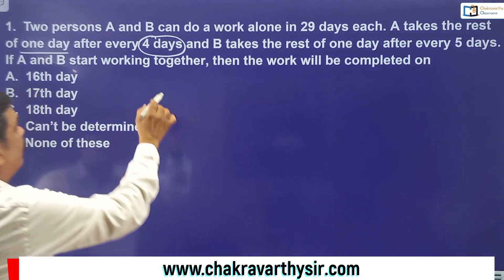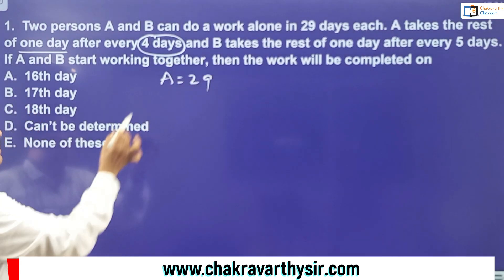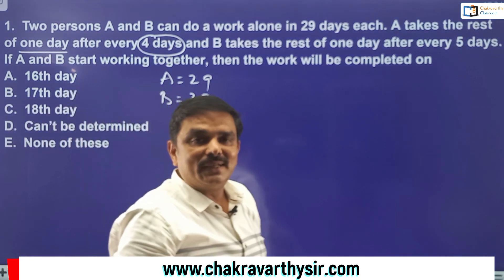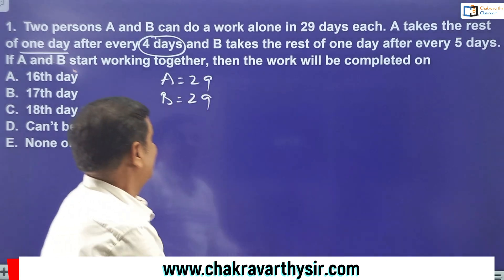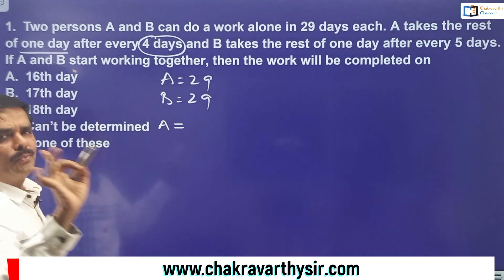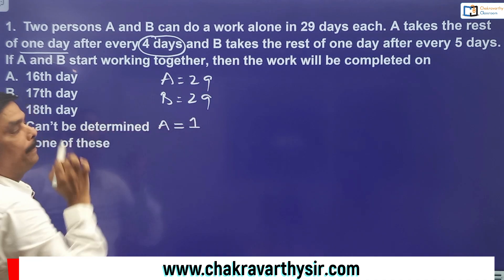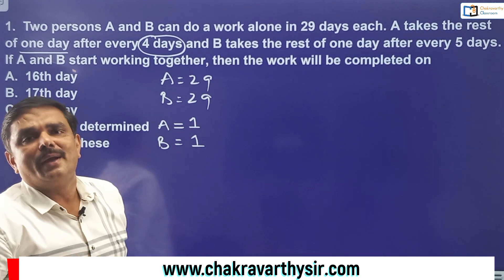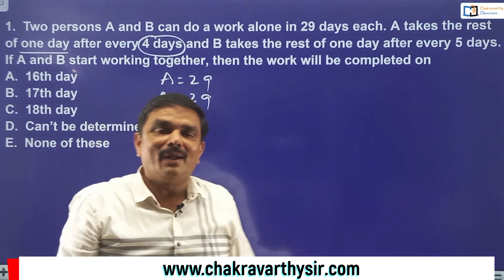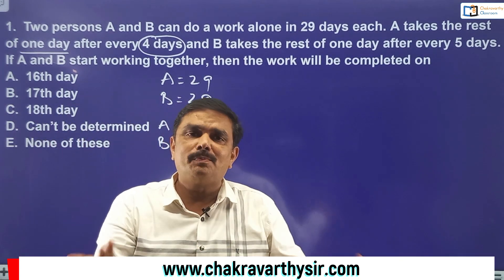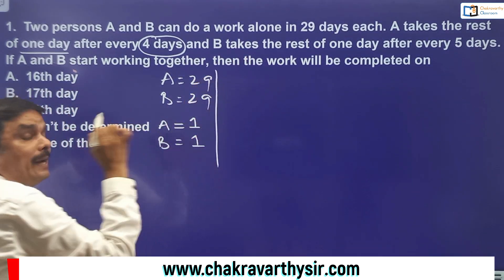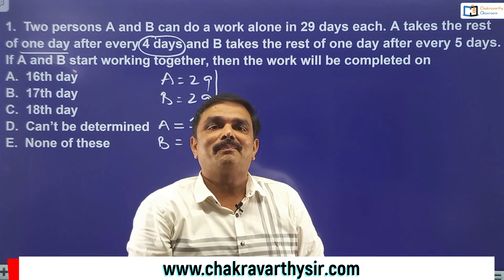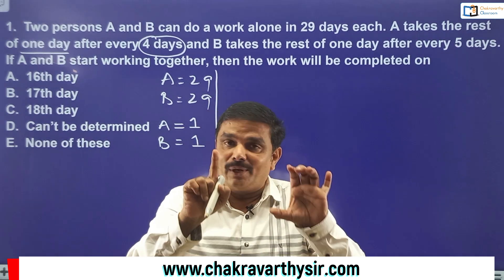We simply do it like this. A can do the work in 29 days and B can also do it in 29 days. The efficiency of A and B is equal — A can do one unit of work per day and B must also do one unit of work per day. This can actually be done in your mind only. Now, coming to the scenario: A takes one day rest after four days, and B takes one day rest after five days. Whenever there is such a comparison, take the highest one — that is B's — after five days, B takes one day rest.